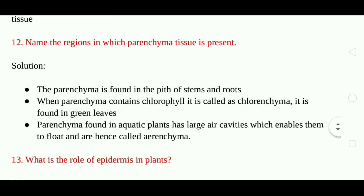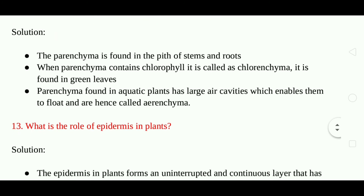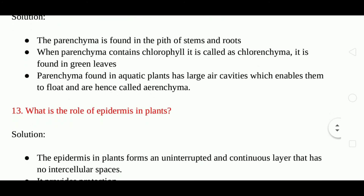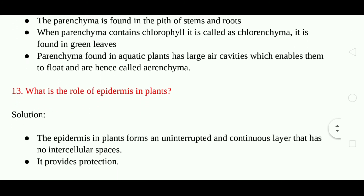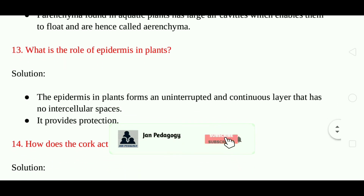Question 12: Name the regions in which parenchyma tissue is present. Answer: Parenchyma is found in the pith of stems and roots. When parenchyma contains chlorophyll, it is called chlorenchyma and is found in the green leaves. Parenchyma found in aquatic plants has large air cavities which enable them to float, and these are called aerenchyma.